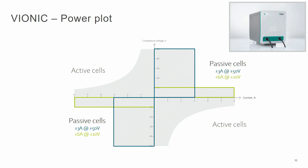As the potentiostat for the measurement, we will use Vionic. I chose this potentiostat because it can apply high compliance voltages even at high currents. This specification is shown in the power plot. In a power plot, the compliance voltage of the instrument is plotted versus current. A potentiostat can either deliver power or it can dissipate the power delivered by the cell.